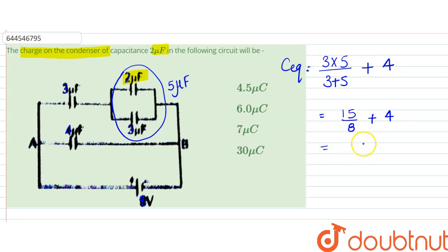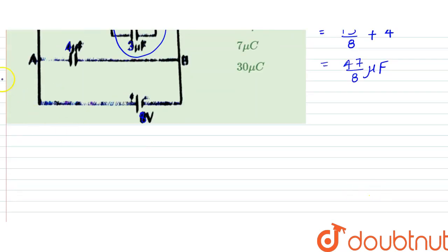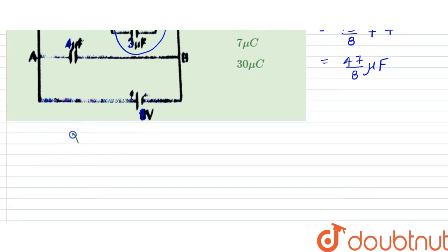Which in turn is 15 plus 32, so that is 47 by 8 microfarad. That would be the equivalent. So potential across them is 8 volt as we know, right.